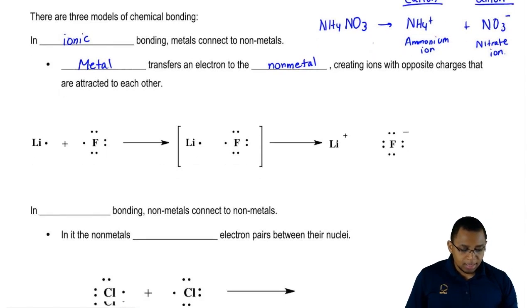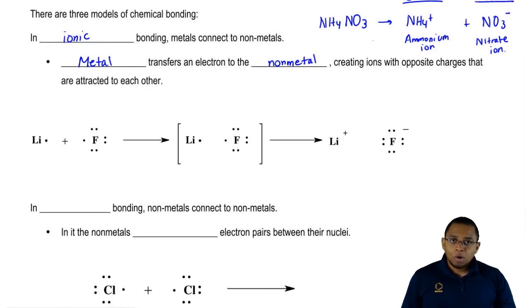Now if we take a look at this, how does it work? Well here we're going to say that lithium wants to combine with fluorine. Lithium is a metal. Fluorine is a nonmetal. These dots around them are called their valence electrons.